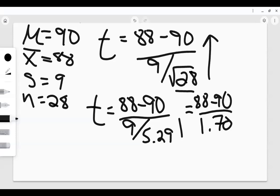So now I want to complete my equation where I have to do 88 minus 90 divided by 1.70. So 88 minus 90 is negative 2 divided by 1.70. I'll just move this down here. So my t equals, if I take negative 2 and divide it by 1.70, I get negative 1.176, or I can round that up to negative 1.18.